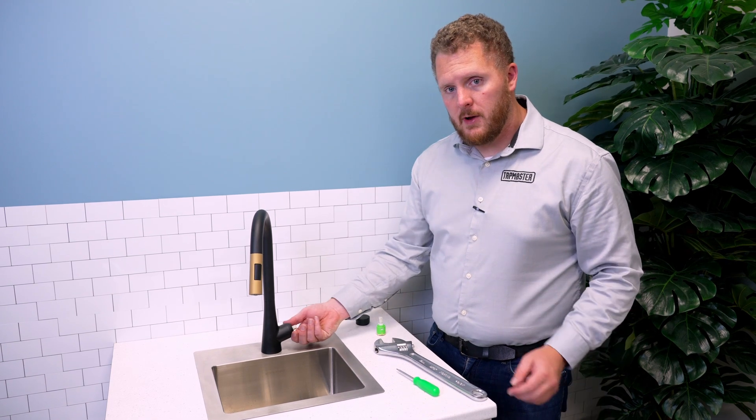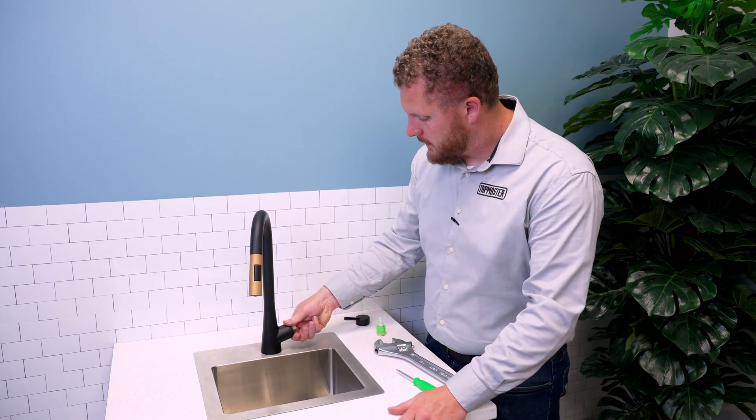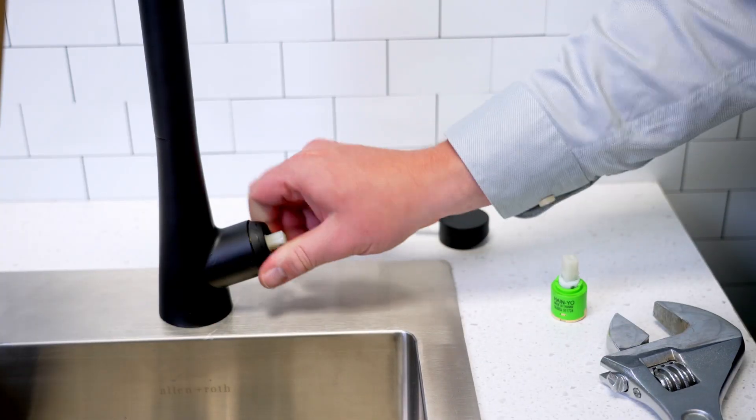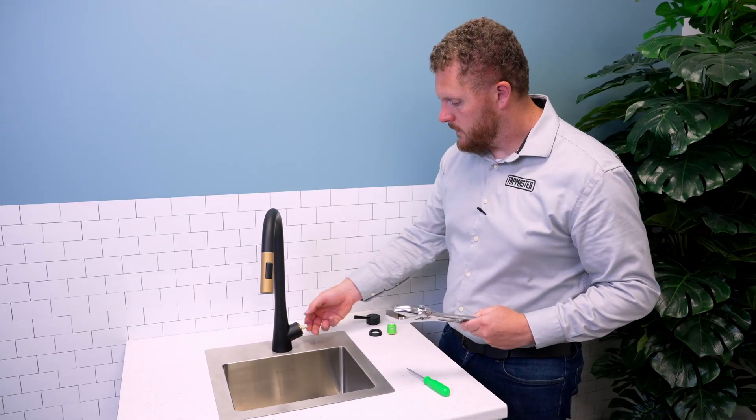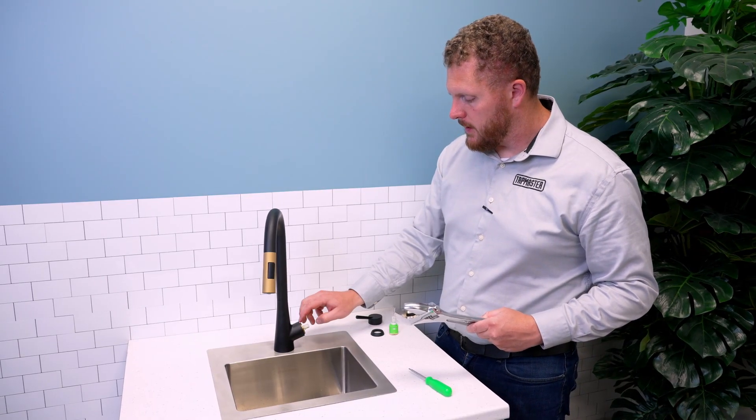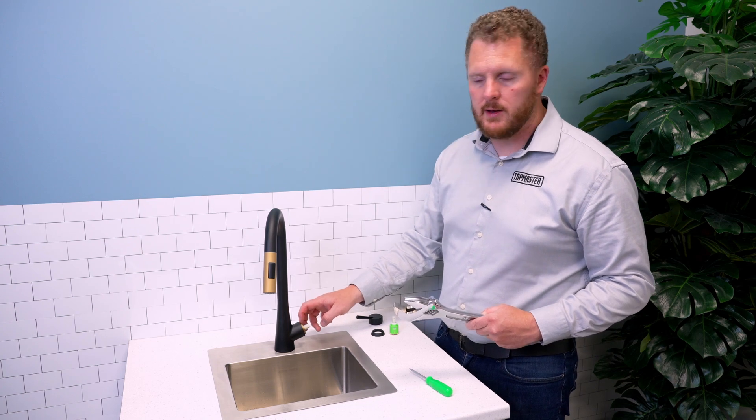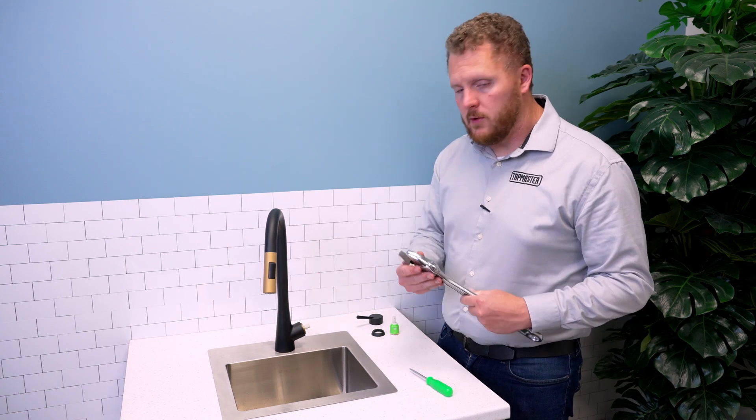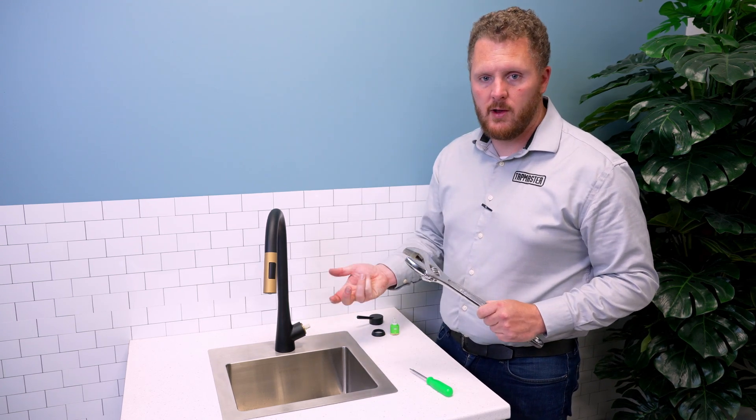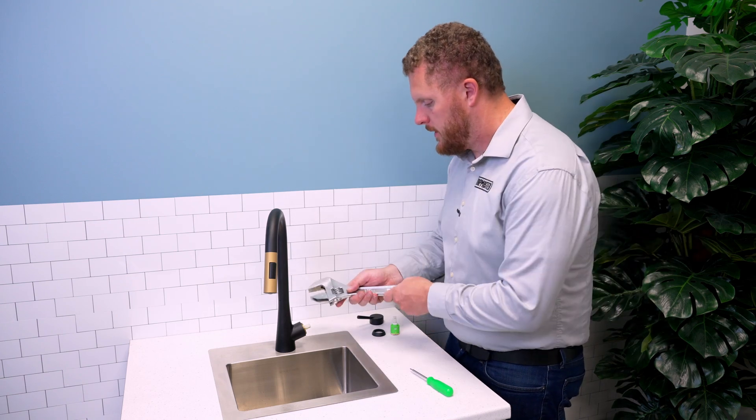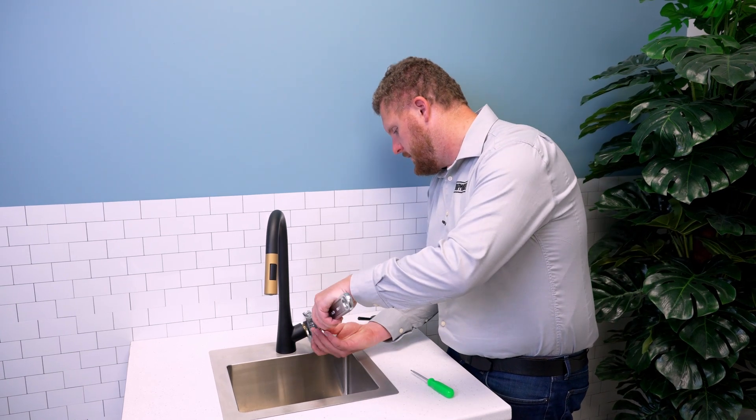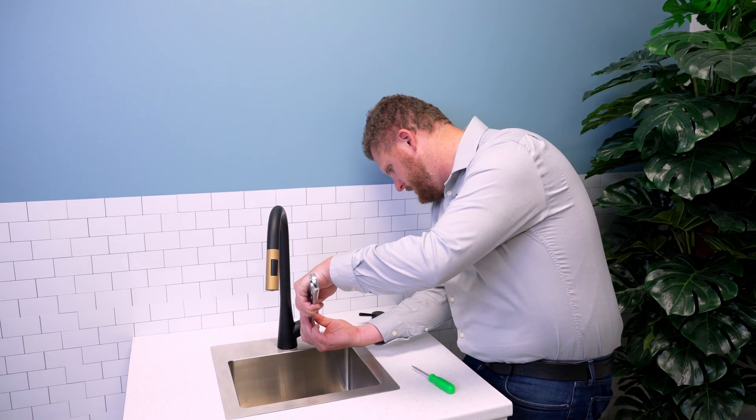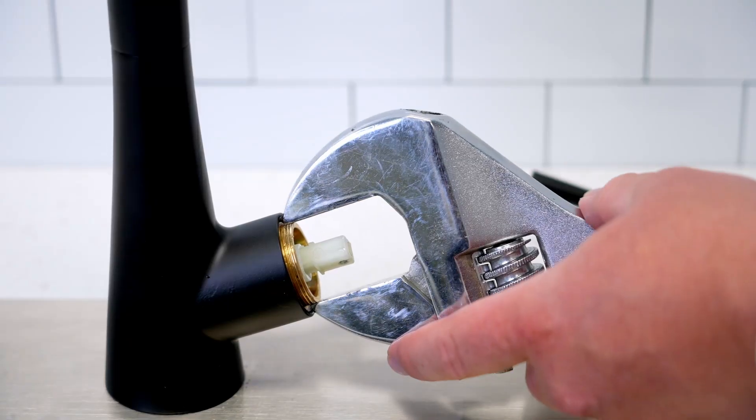Then there will be a decorative shroud here that kind of hides the inner workings. You can thread that off by hand, and then underneath here there will be a brass nut or another kind of metal nut where you either use an adjustable wrench or set of screwdrivers to twist that off. You loosen it off. So here just loosen that off.